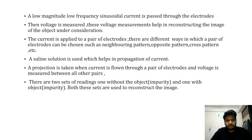Now let us look at the process of electrical impedance tomography. A low magnitude, low frequency sinusoidal current is passed through the electrodes, then voltage is measured. These voltage measurements help in reconstructing the image of the object under consideration. The current is applied to a pair of electrodes chosen using different patterns such as neighboring, opposite, or cross pattern. A saline solution is used which helps in the propagation of current easily.